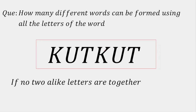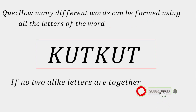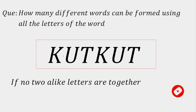Hello everyone. Our today's question is from permutation and combination. How many different words can be formed using all the letters of the word KUTKUT, if no two alike letters are together? So in that word, KK cannot be together, UU cannot be together, and TT cannot be together.